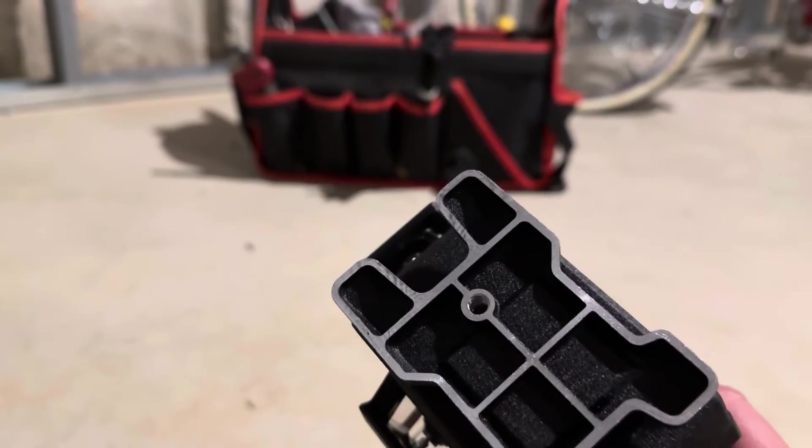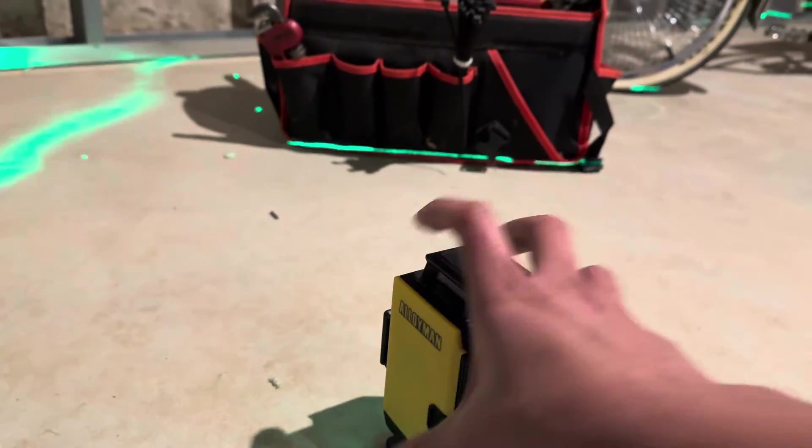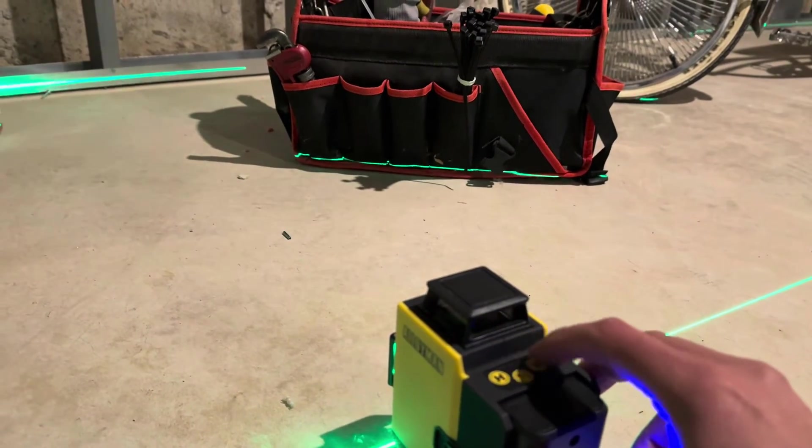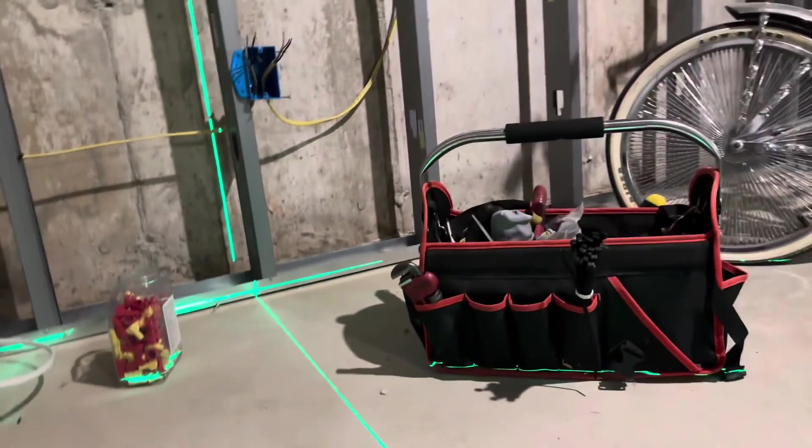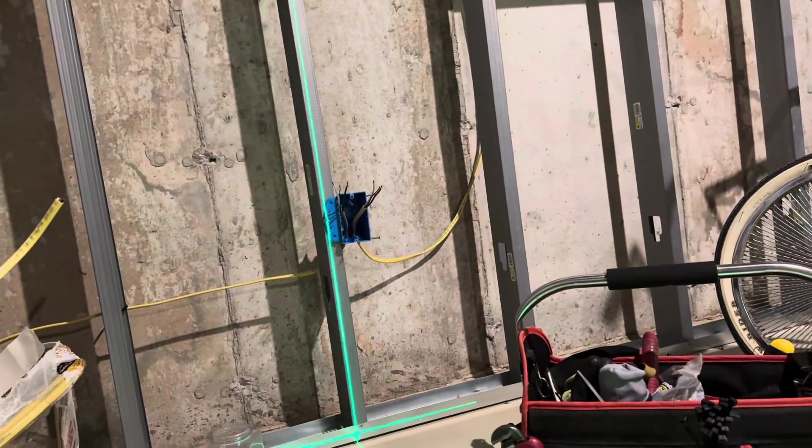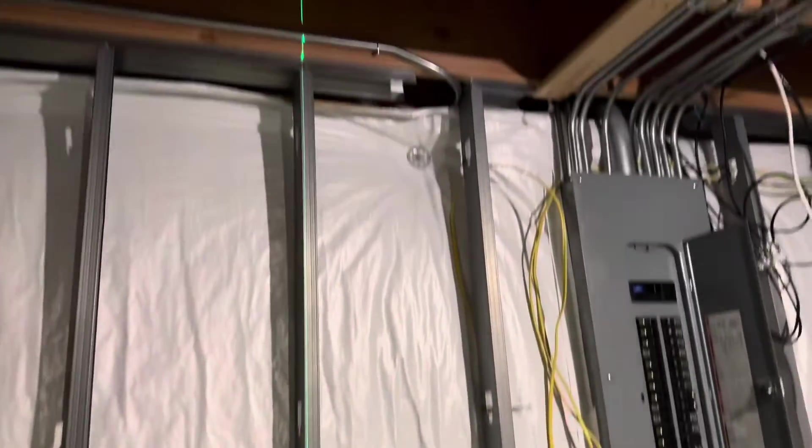But let me lock it back in. It does have a mount here on the bottom here for a tripod. But let me see what I can show you. So let's turn on the vertical lines here. So again, it would be useful when framing out. Get a plumb wall here.